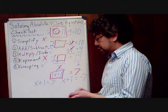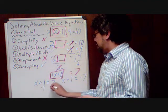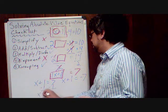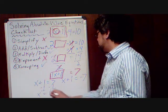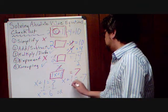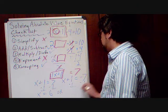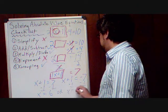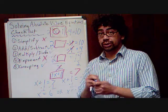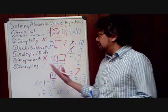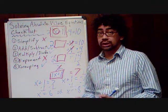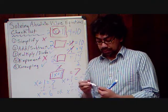So now we're going to do the opposite of adding 1 — subtract 1 — and x will equal 6. Or subtract 1 from this equation as well, and x will equal negative 8. So we end up with two answers. And that's the steps we go through to solve absolute value equations. Good luck on your practice problems.